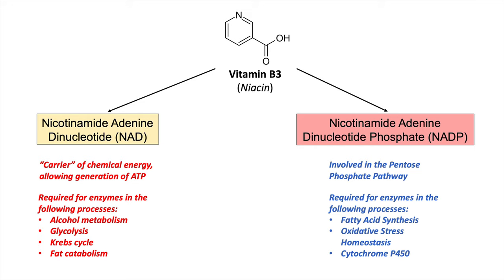NAD and NADP are required for all these processes. NAD is a carrier of chemical energy — when reduced to NADH, it allows generation of ATP in the electron transport chain in the mitochondria — and is also involved in alcohol metabolism. NADP is generated in the pentose phosphate pathway and required for processes like fatty acid synthesis.